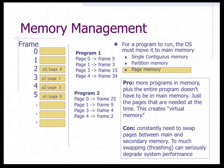The pro for page memory is that more programs fit in memory, and the entire program doesn't have to be in main memory — just the pages needed at the time. This creates what we call virtual memory. The con is the constant swap between main memory and secondary memory; too much swapping, called thrashing, can seriously degrade system performance.